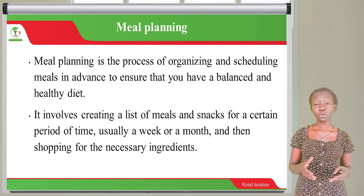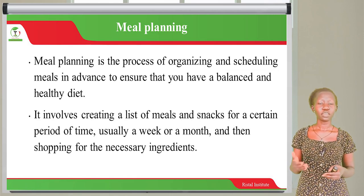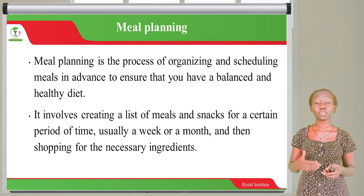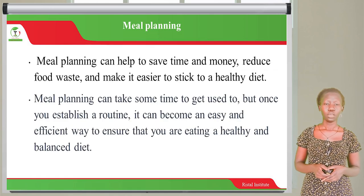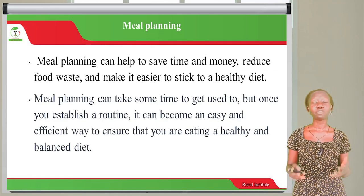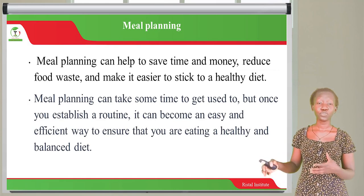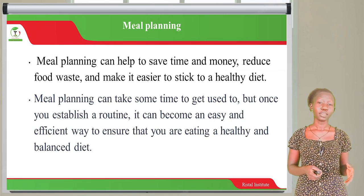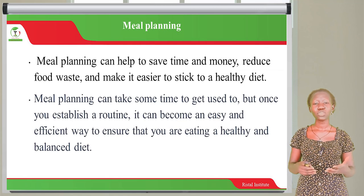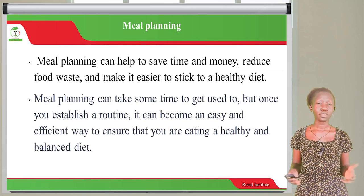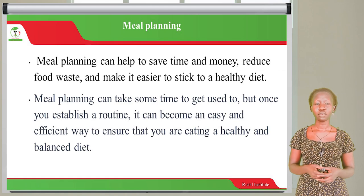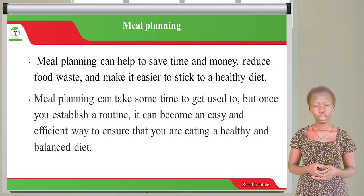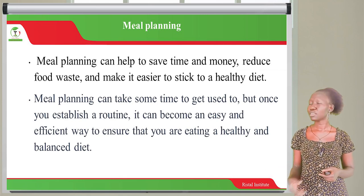Meal planning is the process of organizing and scheduling meals in advance to ensure that you have a balanced and healthy diet. It involves creating a list of meals and snacks for a certain period of time — usually a week or a month — and then shopping for the necessary ingredients. Meal planning can help you save time and money, reduce food wastage, and make it easier to stick to a healthy diet.